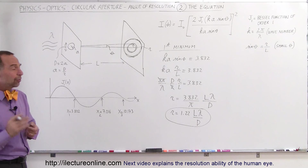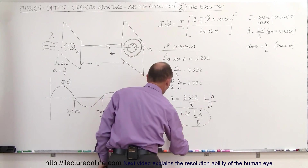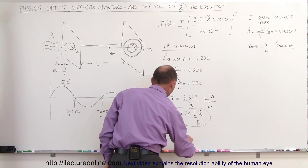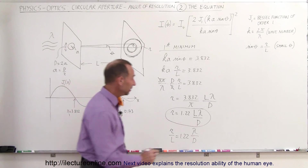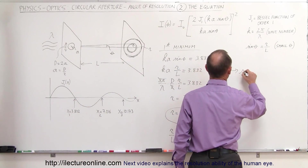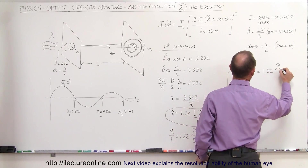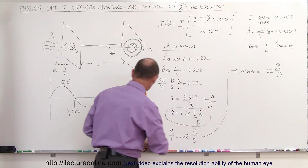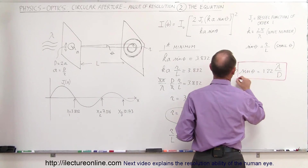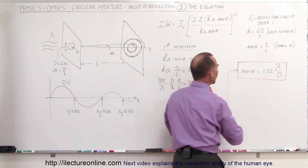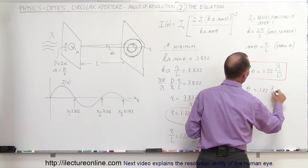Since we really want the angle of resolution, we can write R/L = sinθ, so sinθ = 1.22λ/D. That is the equation describing the resolution angle of a circular aperture. For small angles, we can also write θ (in radians) = 1.22λ/D, which is another form of the same equation.